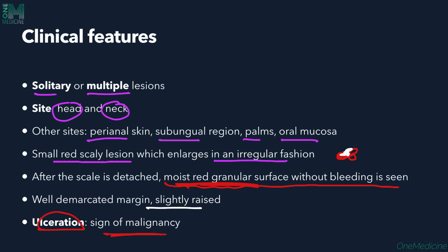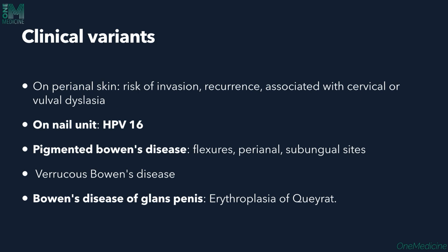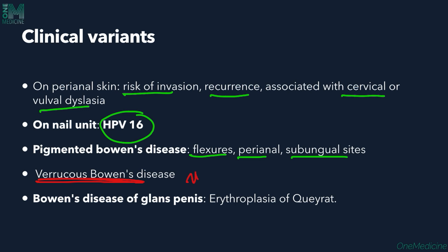The lesion has a well-demarcated margin and is slightly raised. If ulceration is present, it indicates progression to invasive malignancy. Clinical variants include: perianal lesions, which have increased chances of invasion and may be associated with cervical and vulval dysplasia; nail unit involvement, which is mostly due to HPV16; pigmented Bowen's disease affecting flexural, perianal, and subungual areas; and verrucous Bowen's disease with keratotic lesions. Bowen's disease of the glans penis is called erythroplasia of Queyrat.